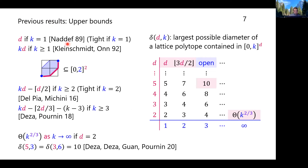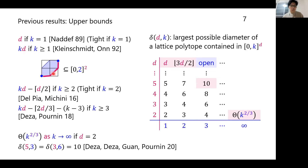Let me briefly explain previous results. Recall that delta(d,k) denotes the largest possible diameter of a lattice polytope contained in the hypercube of range k. The most classical result, by Naddef, shows that for 0-1 polytopes (i.e., k=1) the largest possible diameter is d. This upper bound was later generalized by Kleinschmidt and Onn, showing it is at most kd for any k. However, this upper bound is not tight — for example, it says the value for (d,k)=(2,2) is at most 4, but the value is 3 as mentioned before.